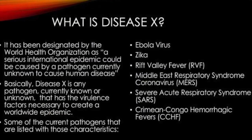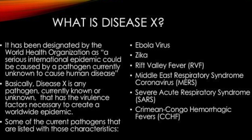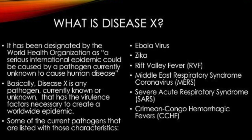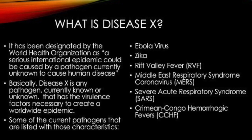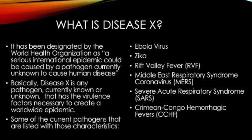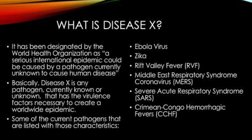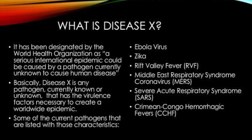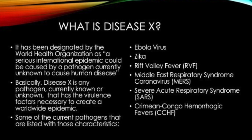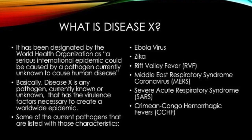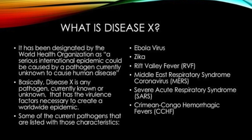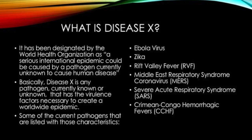What is Disease X? It has been designated by the World Health Organization as a serious international epidemic that could be caused by a pathogen currently unknown to cause human disease. Essentially, Disease X is any pathogen currently known or unknown that has the virulence factors necessary to create a worldwide epidemic.